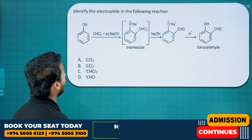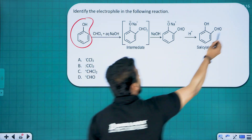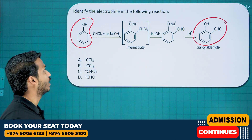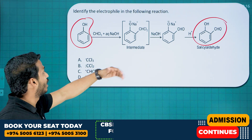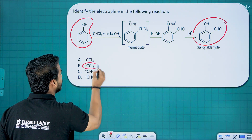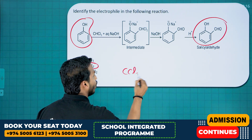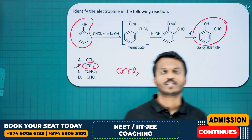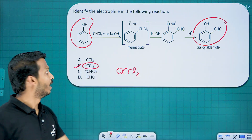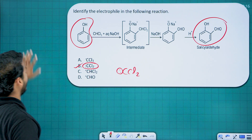Next: Identify the electrophile in the following reaction. This is phenol converted to salicylaldehyde — that is our Reimer-Tiemann reaction. Many students write CH2 and all, but the electrophile is CCl2, the carbene intermediate. That is the compound forming during the Reimer-Tiemann reaction.